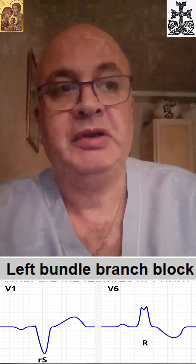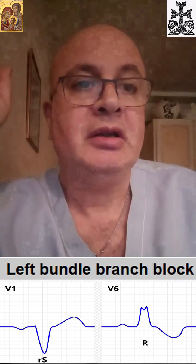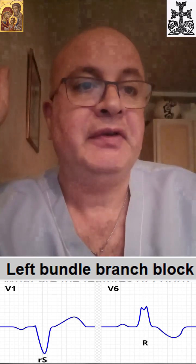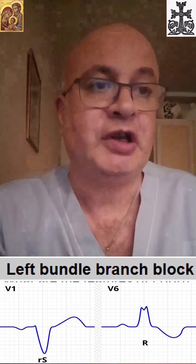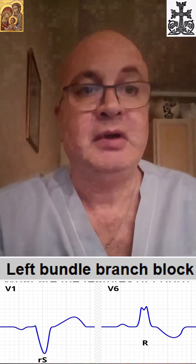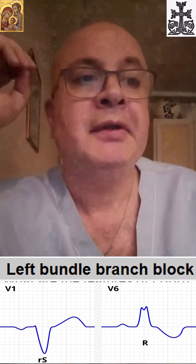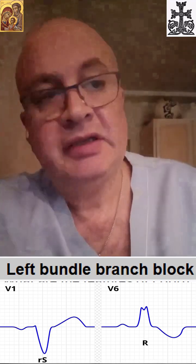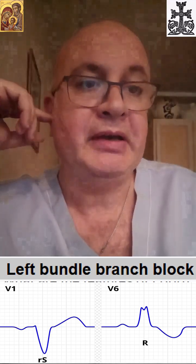Yes, that's why it's left bundle branch block. In leads V5 and V6 there is a broad notched M-shaped R wave — M is a sign of block. So V5 and V6 confirms left bundle branch block. In lead V1 there is a deep S wave — yes, that option is also correct.